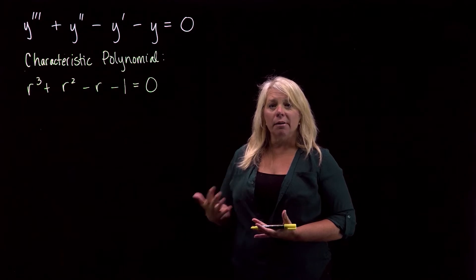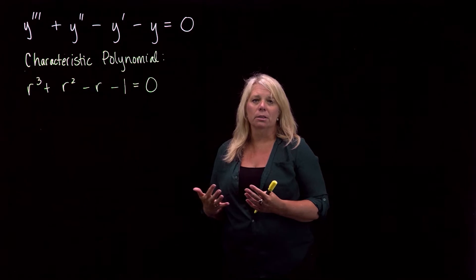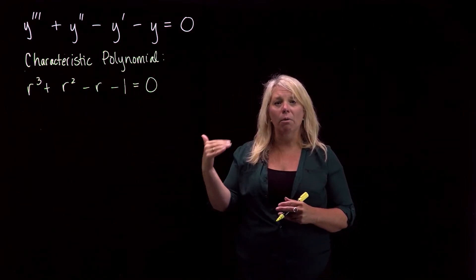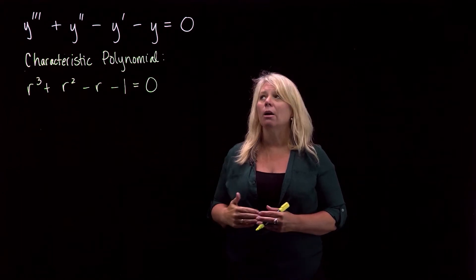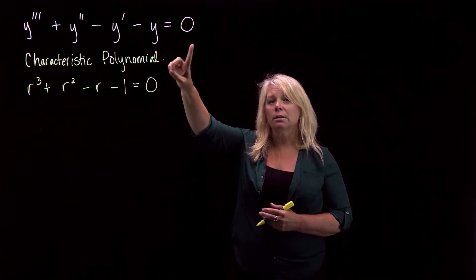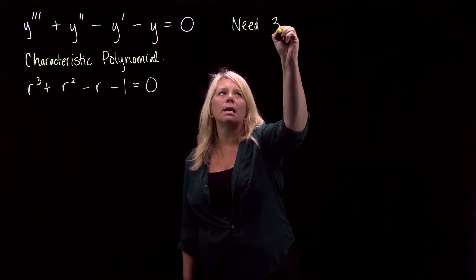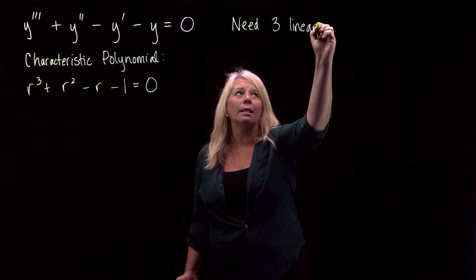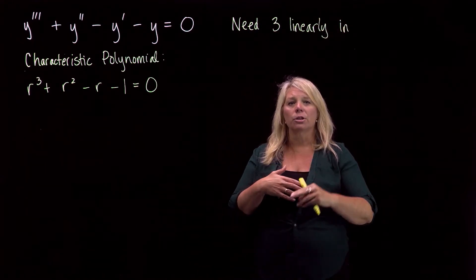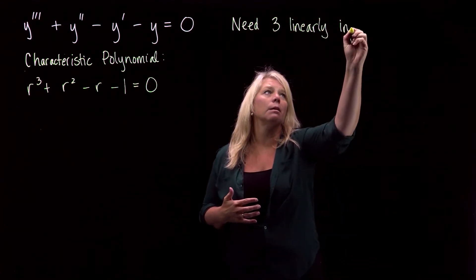Once we find the zeros, we can use them to build the linearly independent solutions needed for this differential equation. Because we have a third-order linear homogeneous differential equation, we know we need three linearly independent solutions. If we can get those, we write down the general solution as all possible linear combinations of those three linearly independent solutions.